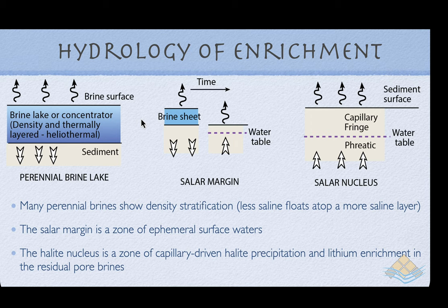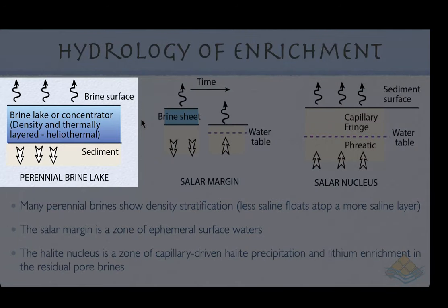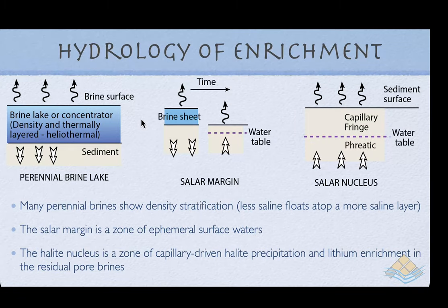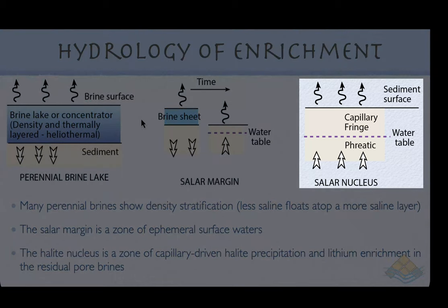Let's look at the hydrology of enrichment and compare three hydrological styles in natural lithium brine systems. At one end of the spectrum we have brine lakes — perennial brine lakes or concentrator pans — which tend to be density and thermally stratified bodies of water with less dense water floating atop more saline denser brines. That is the situation in Lake Zabuye. At the other end we have the salar or salt flat or sabkha system, where we have a water table in the subsurface usually centimeters to a meter or more below the surface, with capillary evaporation taking place and halite precipitating in that capillary fringe.